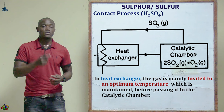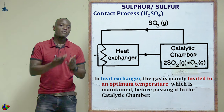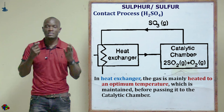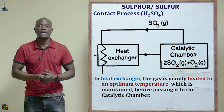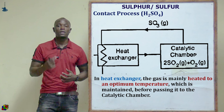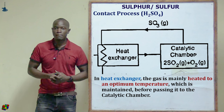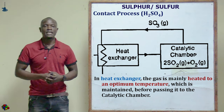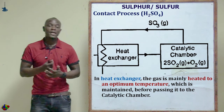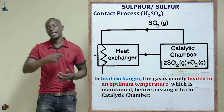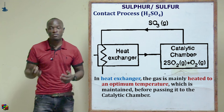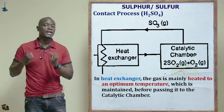The third chamber is the heat exchanger, where the gas passes through and then comes back through the heat exchanger for heat absorption to take place. In the heat exchanger, the gas is heated to attain a desired temperature before being passed to the catalytic chamber.